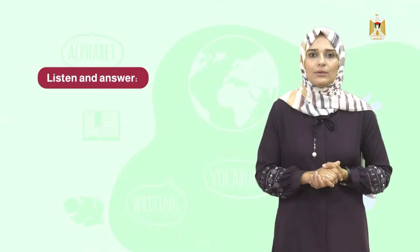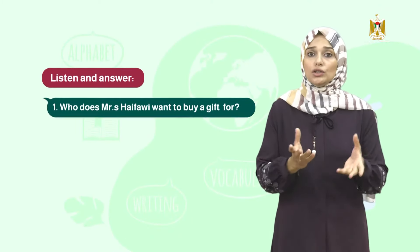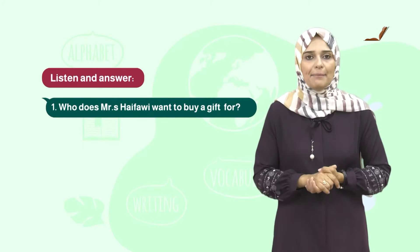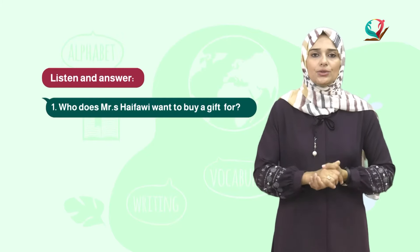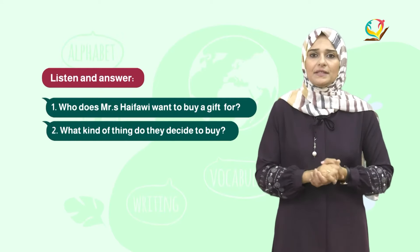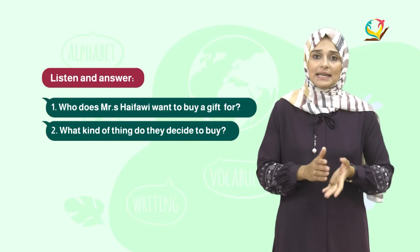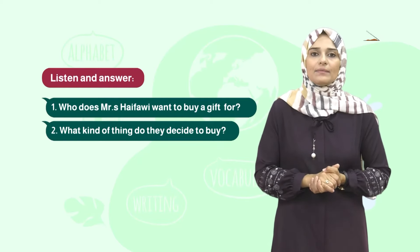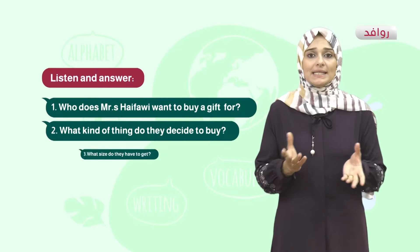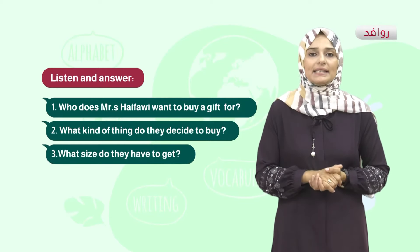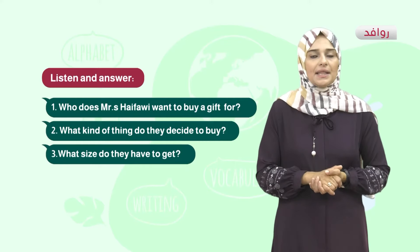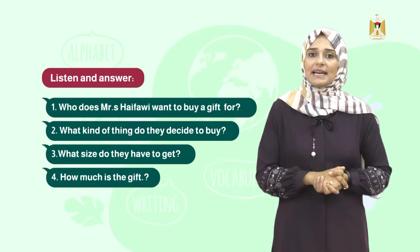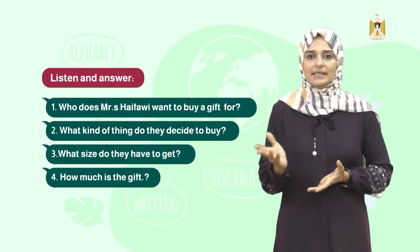Let's answer the questions now. Number 1: Who does Mrs. Haifawi want to buy a gift for? Yes, for Ahmad. Question 2: What kind of thing do they decide to buy? Yes, they decided to buy trainers. Number 3: What size do they have to get? Size 36. Number 4: How much is the gift? 99 dollars 99.